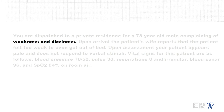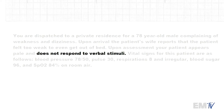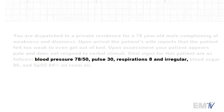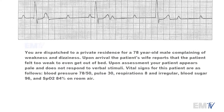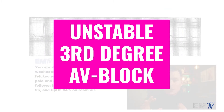The patient is weak and dizzy — this may not necessarily be considered unstable, but it should cause red flags. Felt too weak to get out of bed. Does not respond to verbal stimuli — this is definitely a CHAD criteria for instability; he is altered. Vital signs: blood pressure 78 over 50, so he's hypotensive. Pulse is 30. Respirations are 8 and irregular, so he's also dyspneic. He meets several criteria for instability. I would diagnose this as an unstable third-degree AV block.